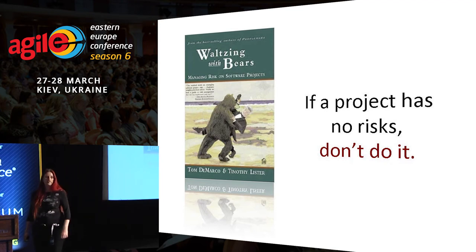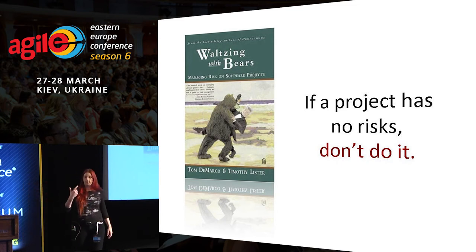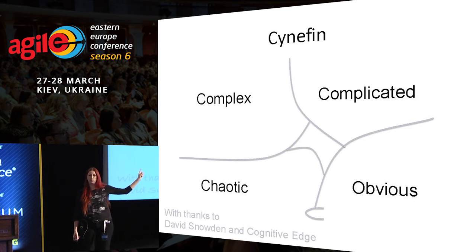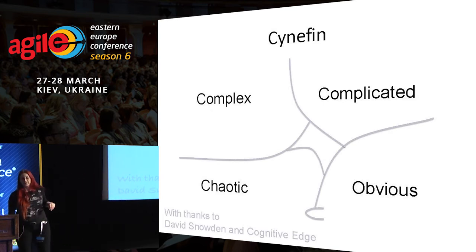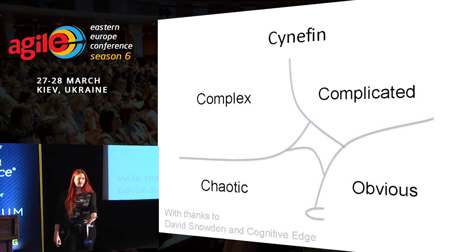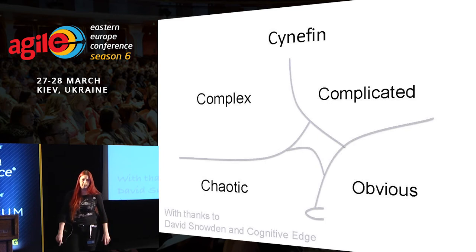I'm going to show you how to use BDD to explore that space. Before I do, I want to introduce you to the vocabulary I use when talking about risk — it's called Cynefin. Now you can see how it's spelt; that's the hardest thing about Cynefin, being able to spell it. Cynefin is a framework for looking at different situations depending on how much uncertainty there is in them. The most certain kind of situation is an obvious one — used to be called simple. These are domains, not quadrants; the boundaries are fuzzy and things move around within the Cynefin framework.